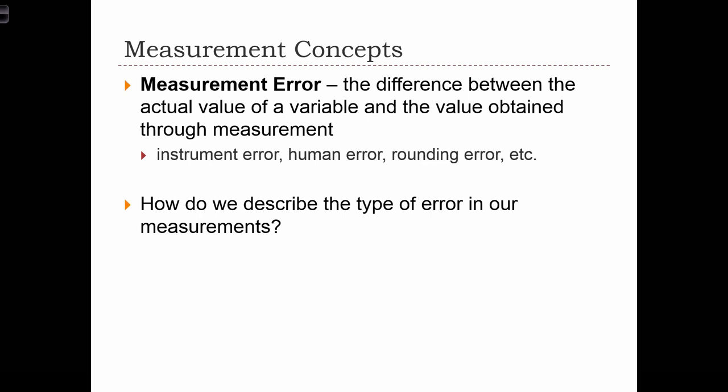There are many sources of error in our datasets. One is human error — I might have measured you and read the tape wrong, adding or subtracting some height from your actual height. I might also have made a mistake because my tape measure is no good. Additionally, when we type written notes into the computer, I might enter data into Excel incorrectly — that's another kind of human error called data entry error.